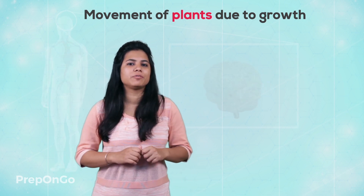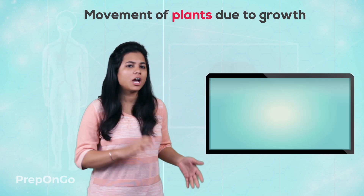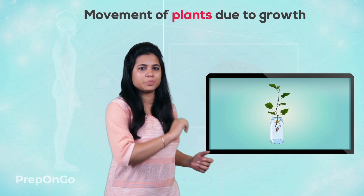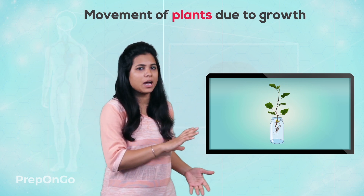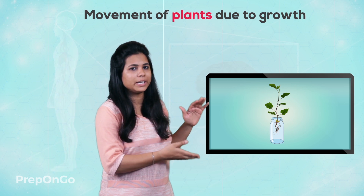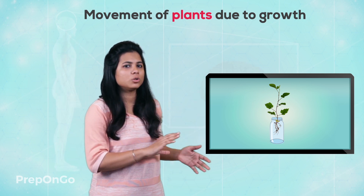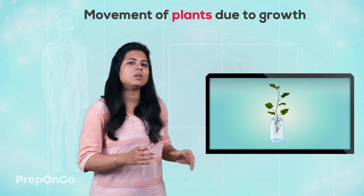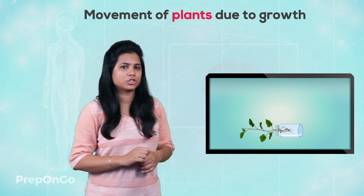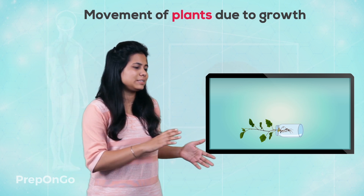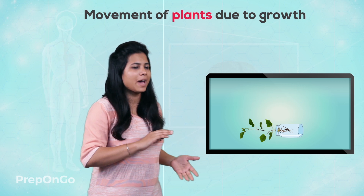Let's perform an activity to see the geotropism effect. We take a plant in a transparent jar. Normally the shoot is pointing upwards and the roots are downwards towards the earth — this is a normal plant. Now let's tilt the pot in the horizontal direction, and you will see that the shoot and the root are parallel to the ground.